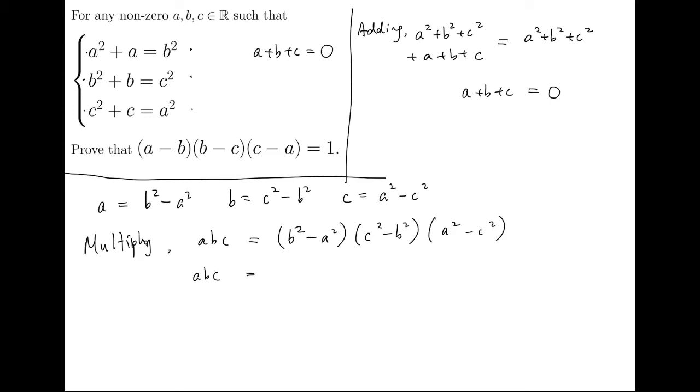As I said before, we have to factorize the right-hand side. abc equals (b minus a) times (c minus b) times (a minus c), the terms that we want, and the things that are b plus a, c plus b, and a plus c.